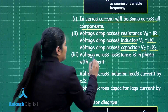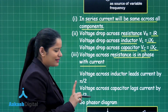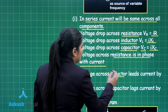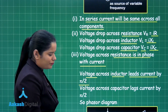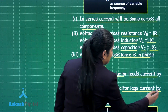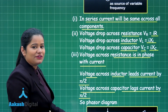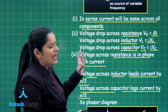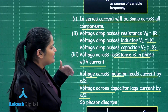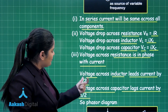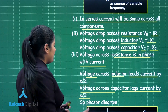In a series LCR circuit, voltage across the resistance is in phase with the current. In the case of the inductor, voltage leads the current by a factor of π/2, and voltage across the capacitor lags the current by a factor of π/2. So there is a phase difference between voltage and current for both the inductor and the capacitor.